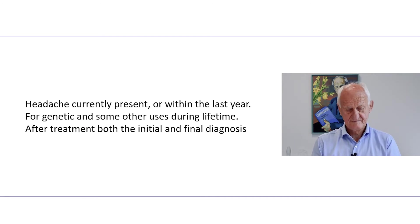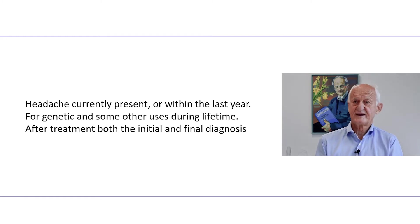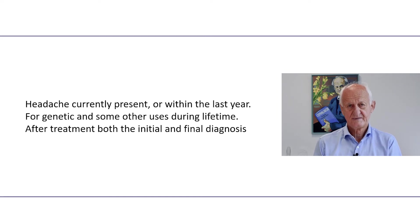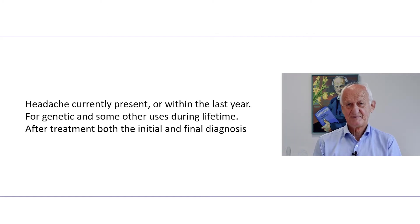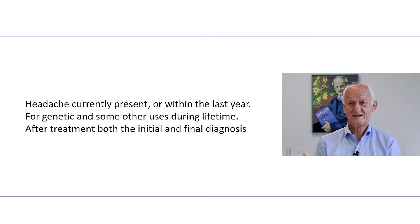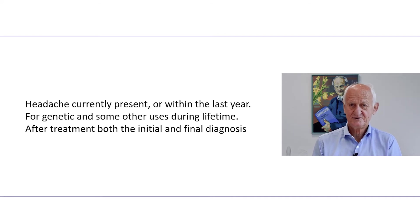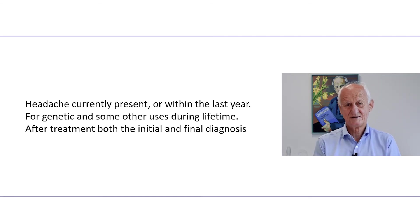There are a number of rules about how to use the classification. We normally diagnose patients for the headache they have at the present time — they could have had another headache 20 years ago, but we don't necessarily diagnose that. However, for purposes like genetic research, we diagnose all headaches a patient has had during their lifetime. If a patient comes in with medication overuse headache, we treat it, and when discharged they may have, for example, migraine without aura — in that case we use both diagnoses, because omitting the medication overuse diagnosis means it won't be entered into hospital systems and we won't be reimbursed.